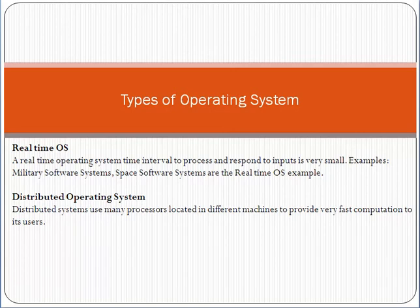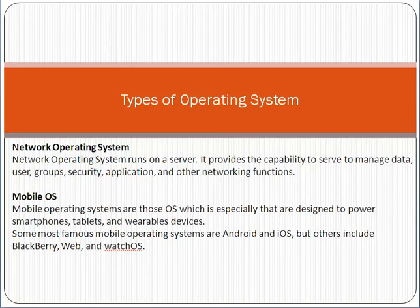Another type is the distributed operating system. Distributed operating systems use many processes located in different machines to provide very fast computation to its users. Then there is the network operating system, which runs on a server and provides the capability to manage data, users, groups, security, applications, and other networking functions.